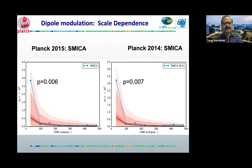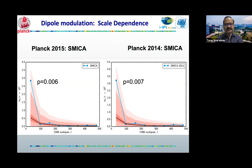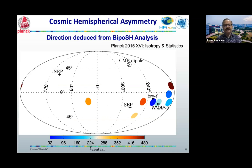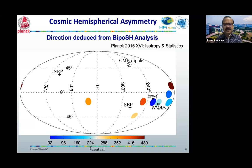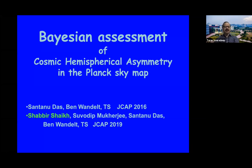Where the Planck analysis stopped: with the Planck team we gave a p-value of six parts in a thousand in the 2015 SMICA map for this effect. We also determined a direction — the blue contour for the low-L part is quite distinct from the Southern ecliptic pole, and the size of the circle represents the one-sigma error of the location.